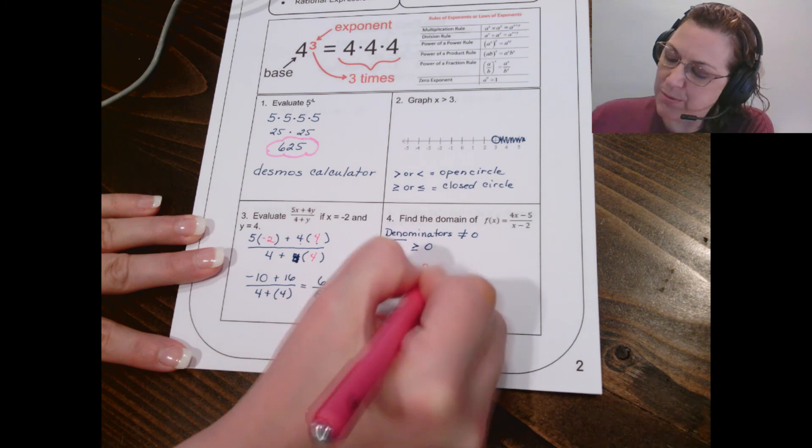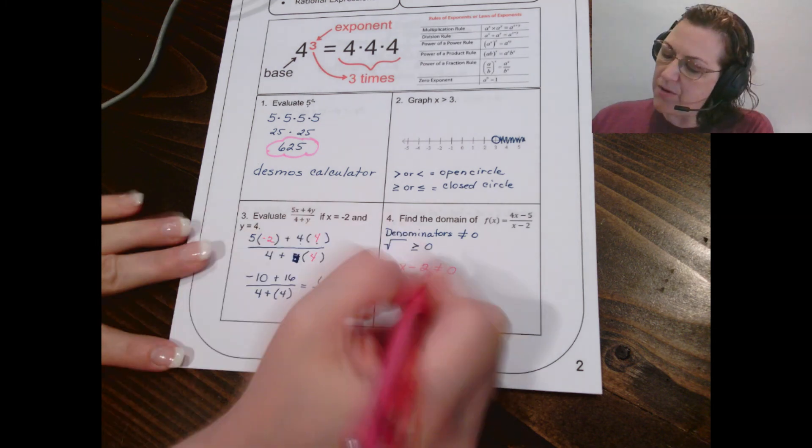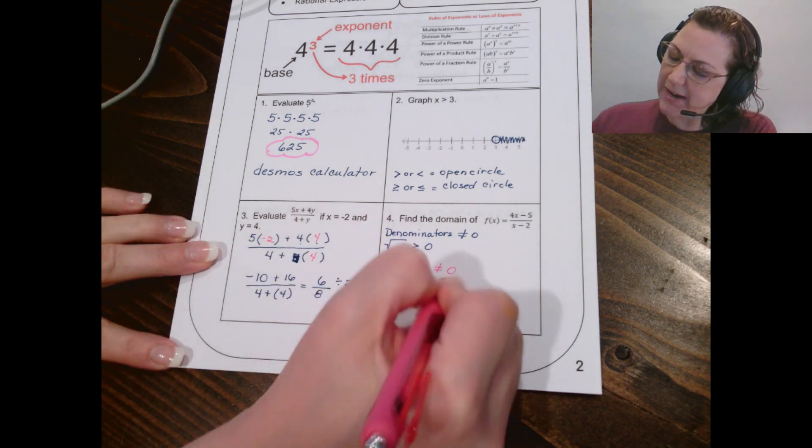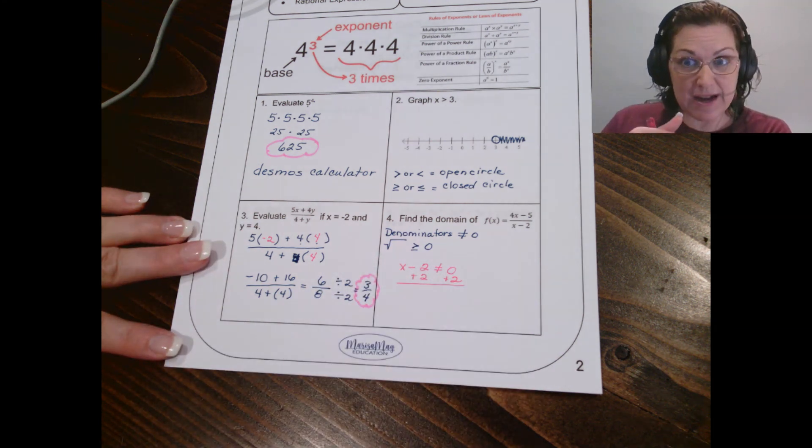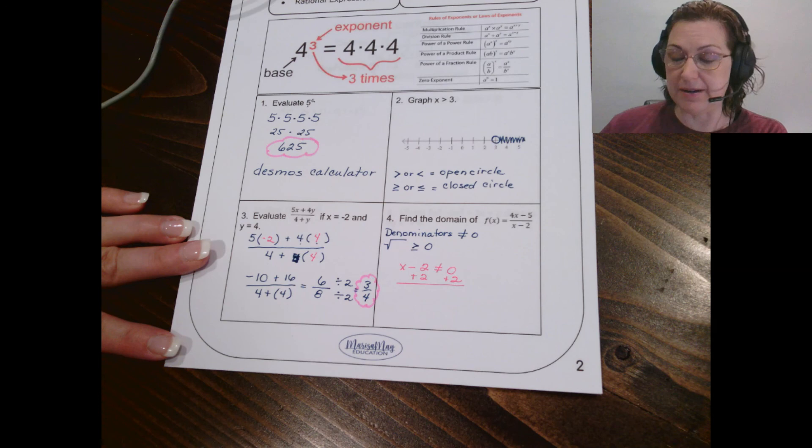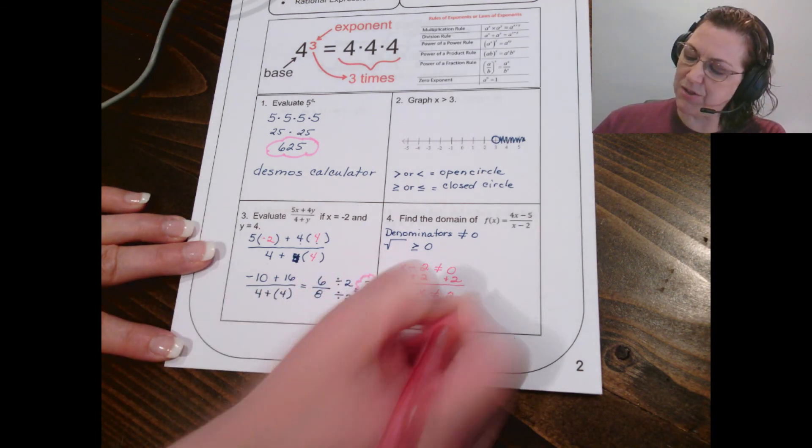So let me tell you what I do. I literally take that denominator and I say it can't equal zero. Notice I took the whole denominator, I said it can't equal zero. So now I go, okay, well I can add 2 to both sides. By the way, I knew to add 2 because there was a minus 2 there and I want to do the opposite. So now I know that x cannot be 2.